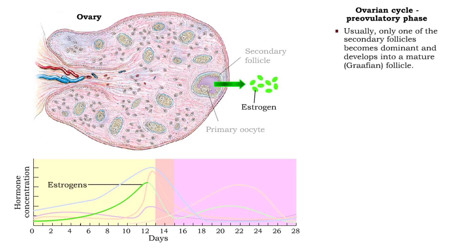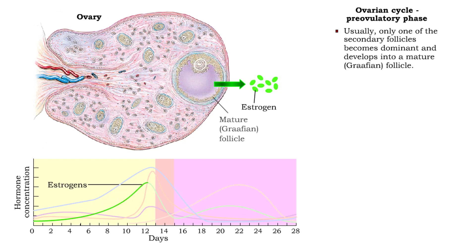During the pre-ovulatory phase, one of the secondary follicles develops into a single, dominant, mature, or Graafian follicle. The mature follicle continues to secrete estrogen, and estrogen blood levels peak.